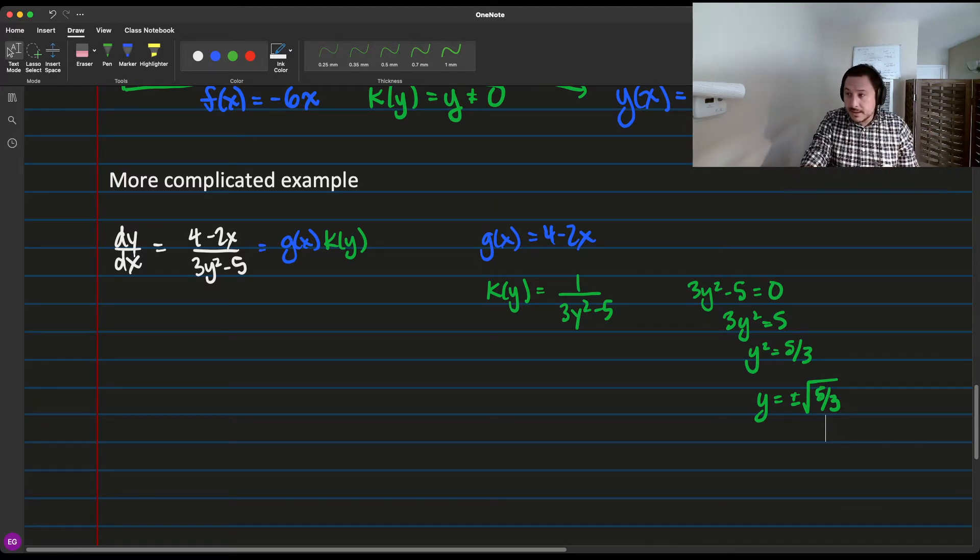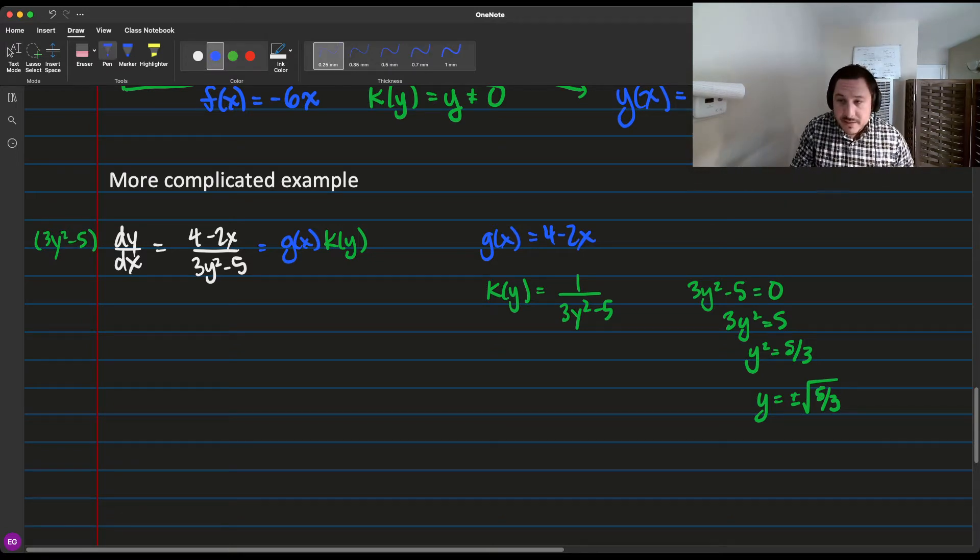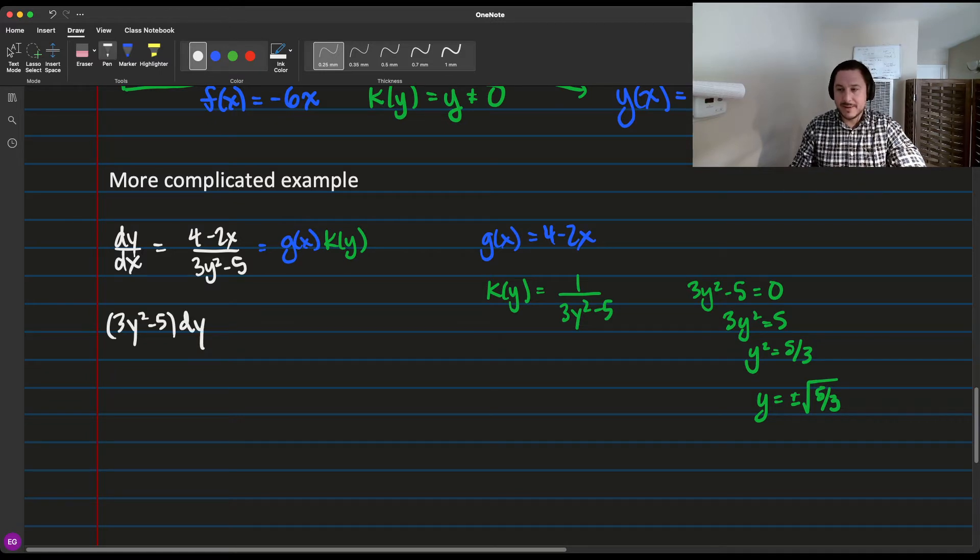Now, so let's do what we need to do to solve. You're going to multiply both sides by 3y squared minus 5. And then you also need to multiply both sides by dx. So what are we going to get? We're going to get 3y squared minus 5 dy equals 4 minus 2x dx.